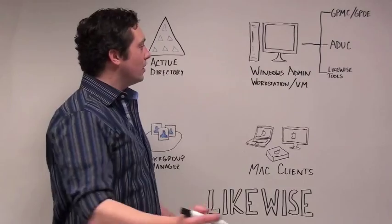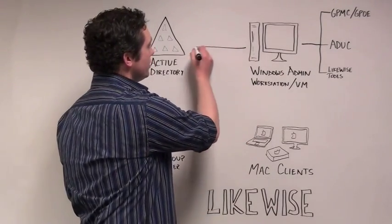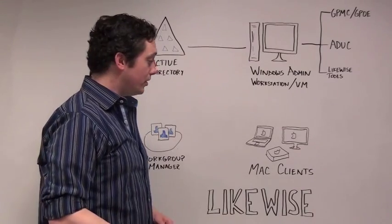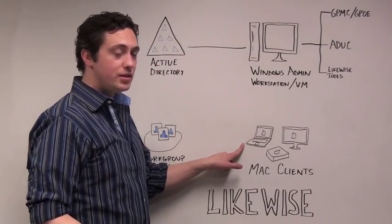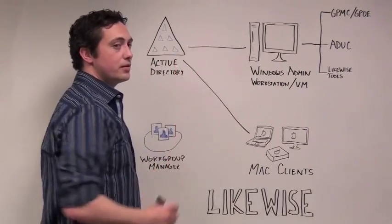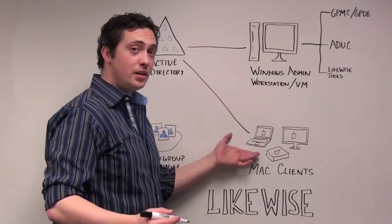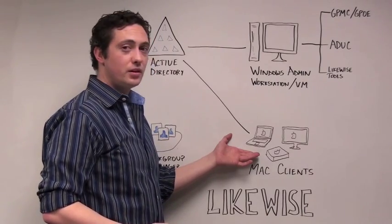So let me show you how it works. You're going to have your Windows Administration Console already joined to Active Directory. The first thing you're going to do is install the Likewise Agent on your Macs and join those machines to Active Directory. Now, any user who logs onto these machines are going to need to do so using their Active Directory credentials.